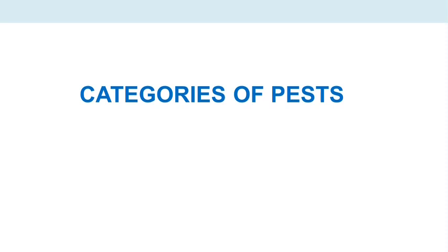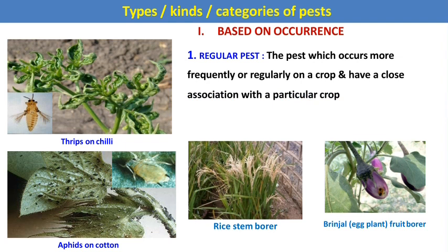Now the major concept: different categories of pest. The first category is based on occurrence. The first type is the regular pest — pests which occur more frequently or regularly on a crop and have a close association with that particular crop. Examples are thrips on chili, aphids on cotton, rice stem borer, and brinjal fruit borer, which have a close association with their host and occur regularly.